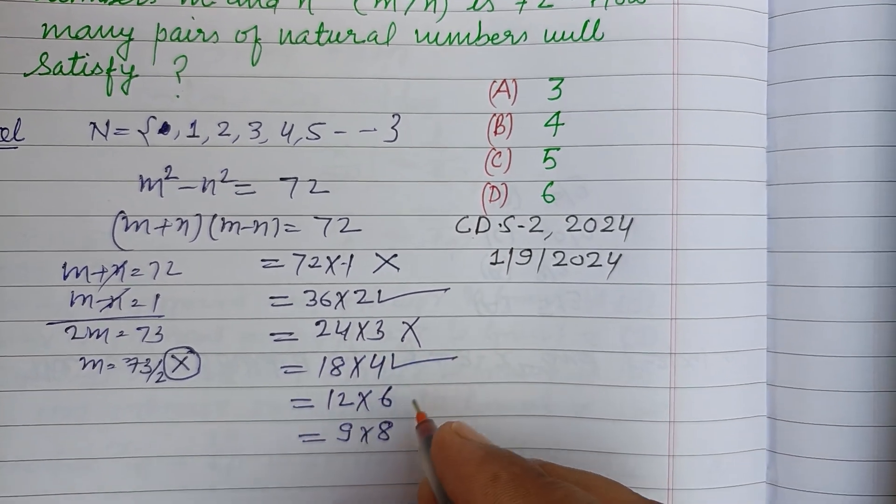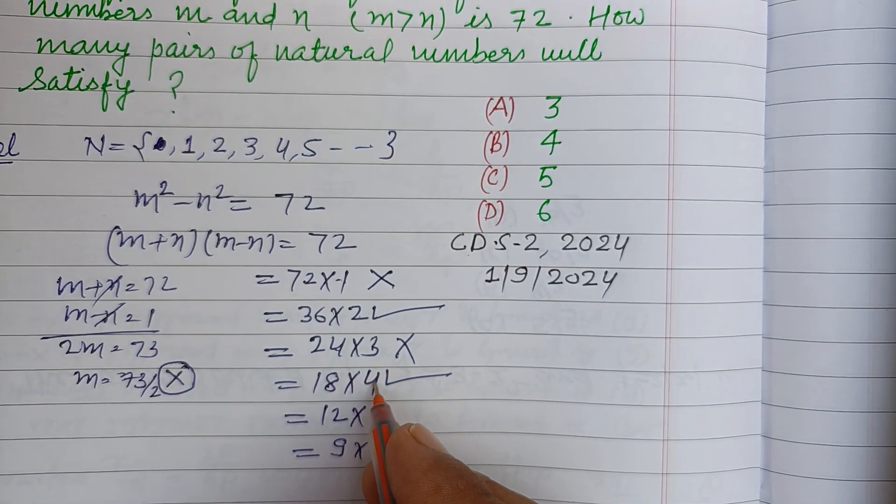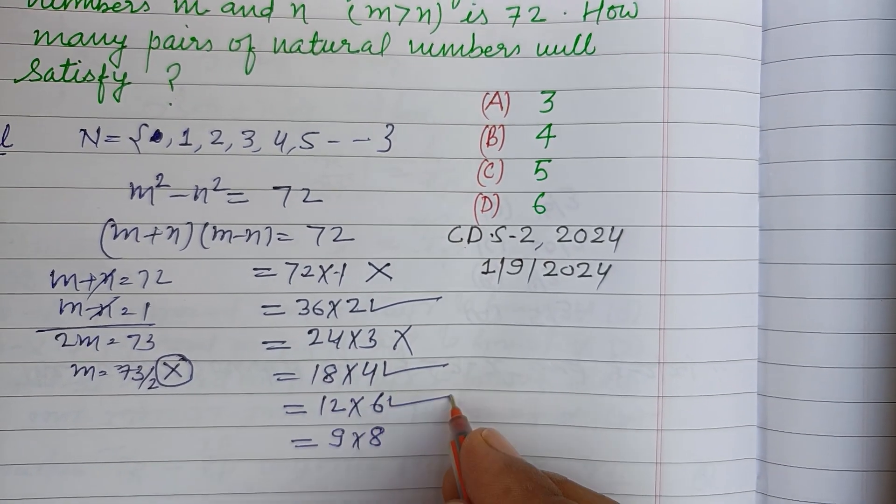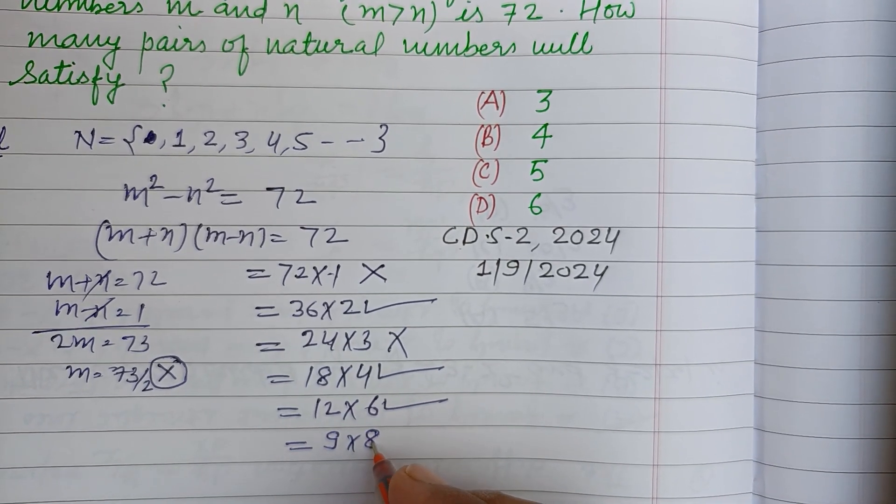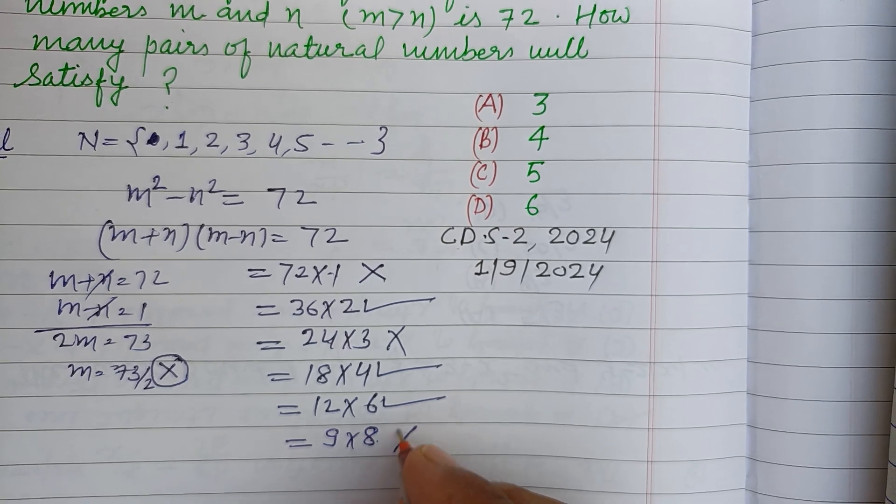And this is possible: 18 plus 4 is 22. And this is possible: 12 plus 6 is 18. And 9 plus 8 is 17, so this is odd, not possible.